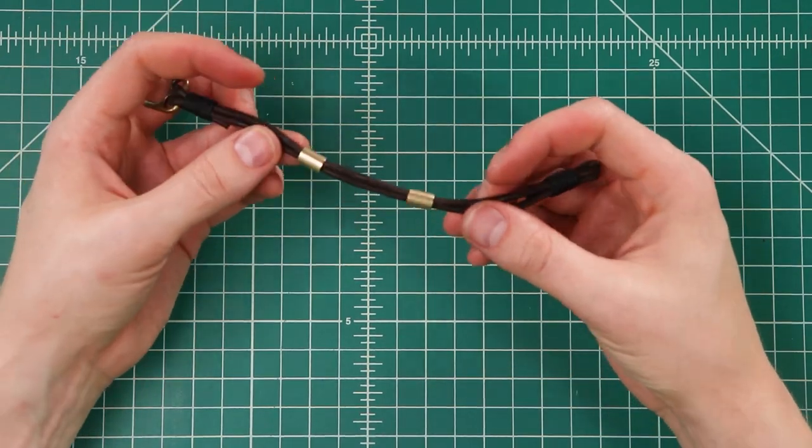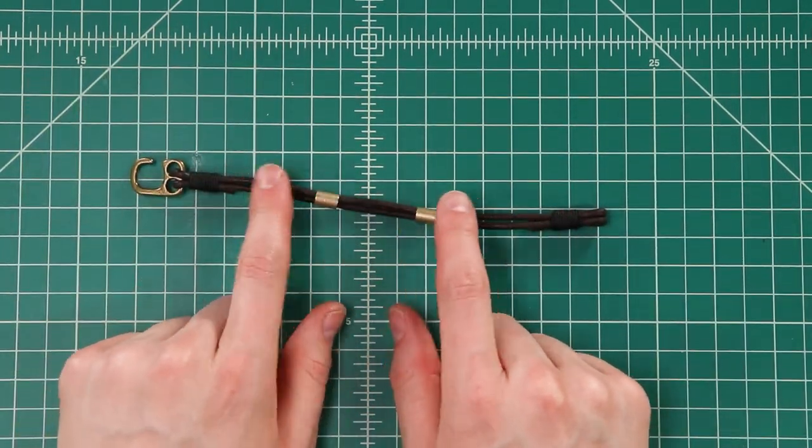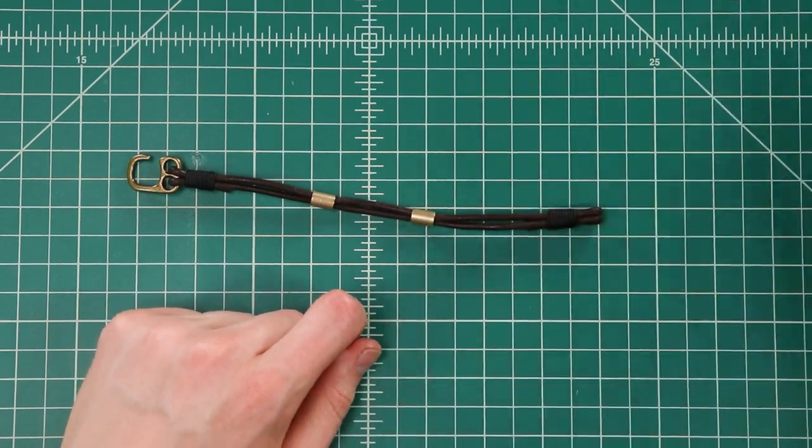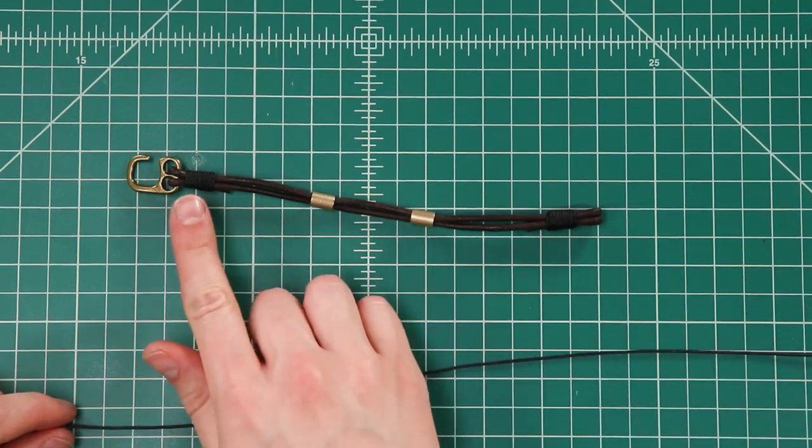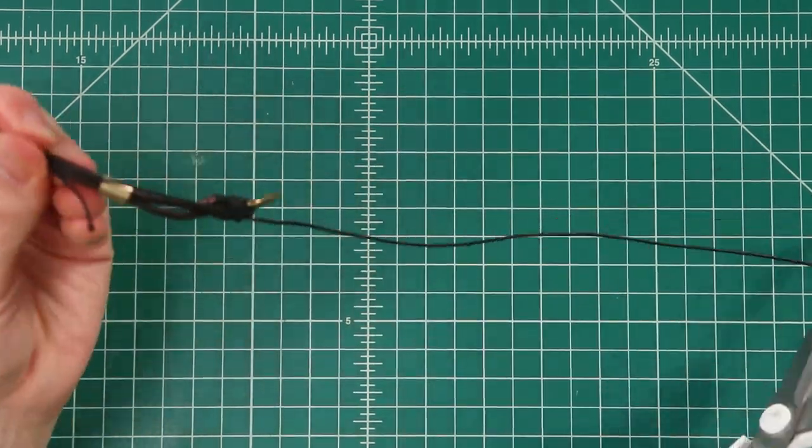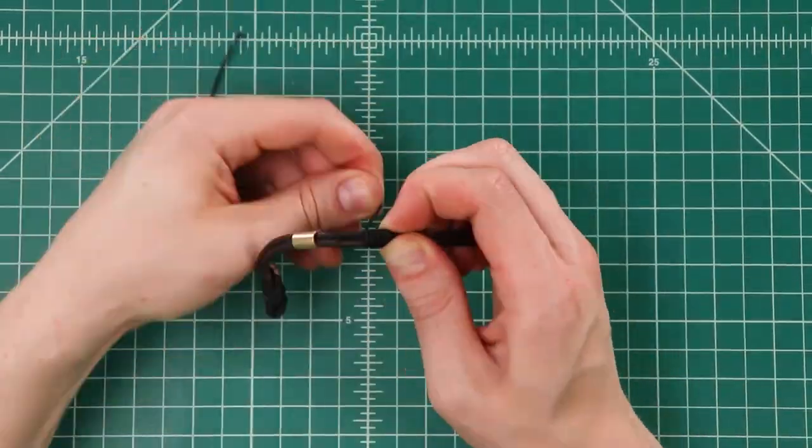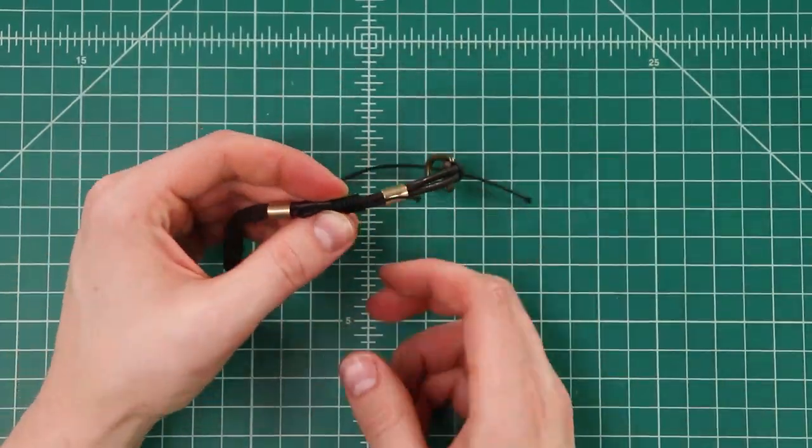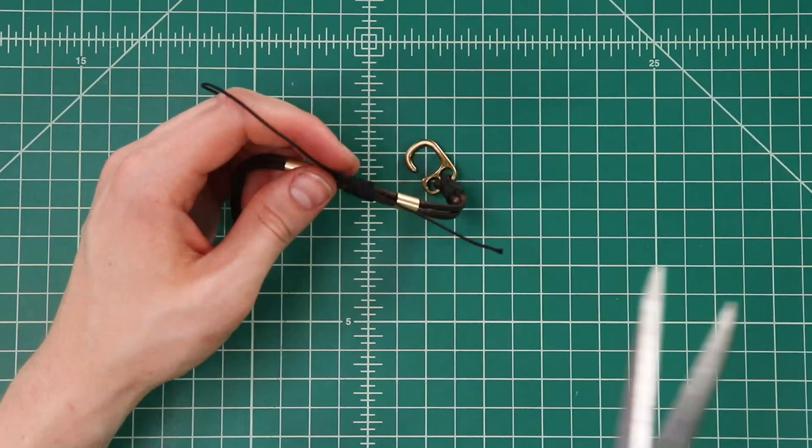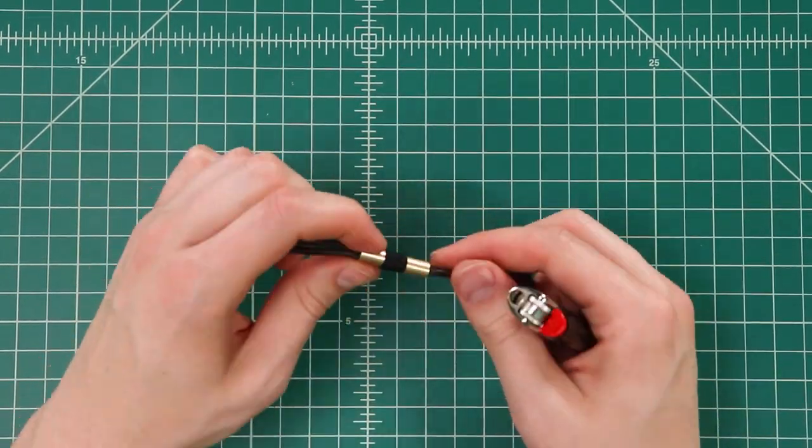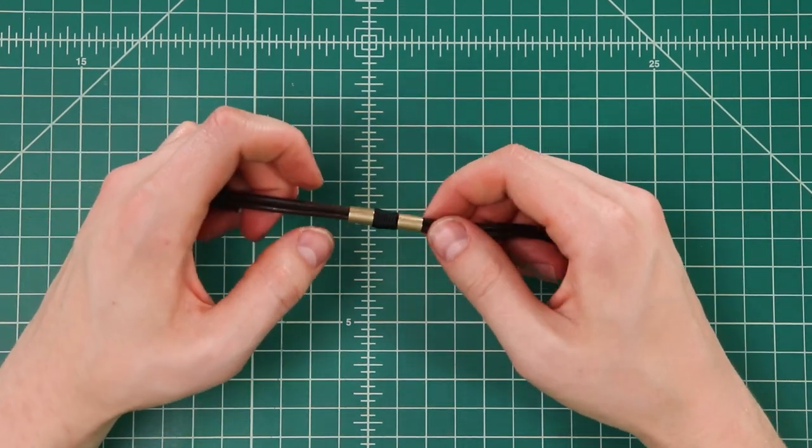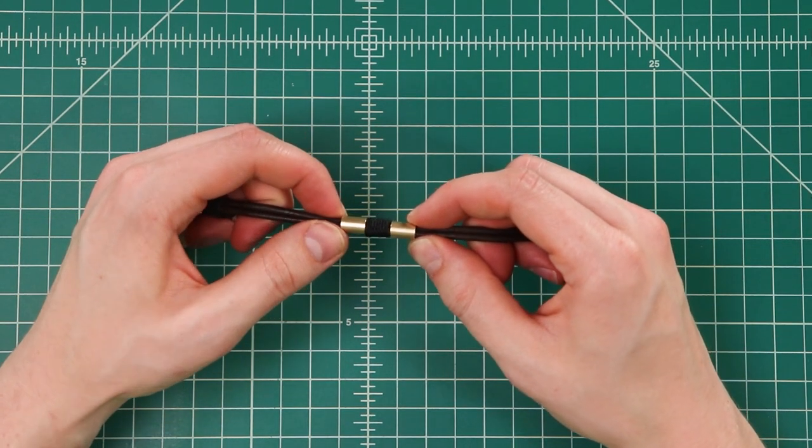Alright, so now that that's done, all we have to do is make two more whippings, or actually three more, between our beads just to keep them in place. So find the middle and make another one of these. Right smack dab in the middle. Alright, so now that middle one's done. You can slide your beads towards it and then do that two more times, one on each side of our spacer beads.